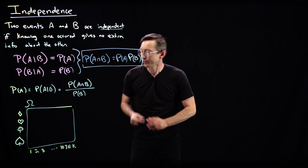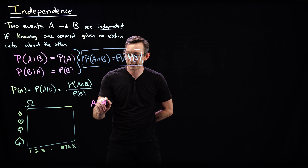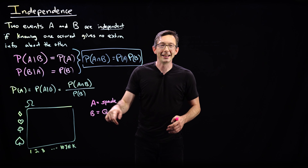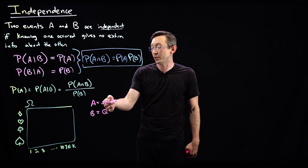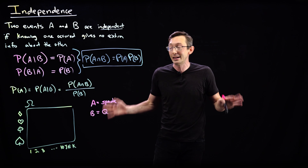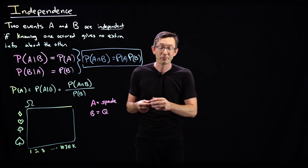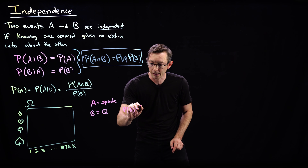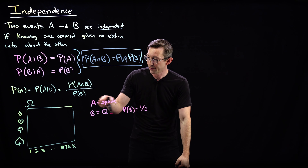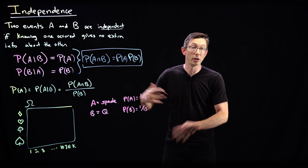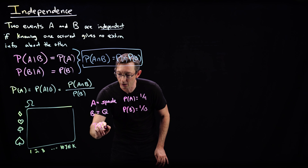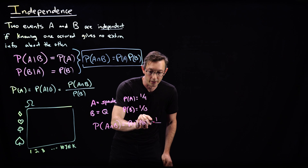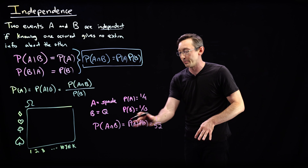Event A could be that my card is a spade, and event B could be that my card is a queen. If I know that my card is a queen, it tells me nothing about whether or not my card was a spade. If I know that my card was a spade, it tells me nothing about my card being a queen — they're completely independent. The probability of my card being the queen of spades is the probability of it being a queen — one in 13 — times the probability of it being a spade — one in four — which is one in 52. There's only one card out of all 52 that's the queen of spades.